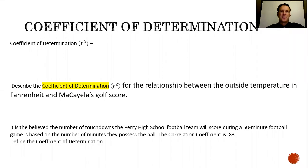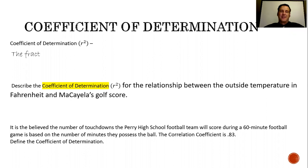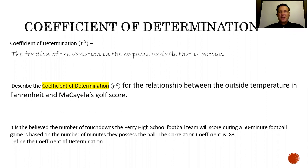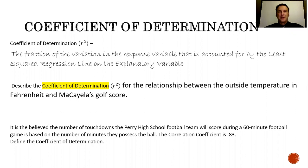This is the coefficient of determination, described by the symbol R squared. The authors define it as the fraction of variation in the response variable that is accounted for by the least squared regression line on the explanatory variable.